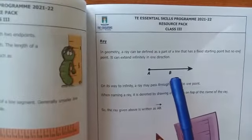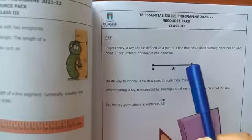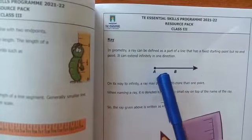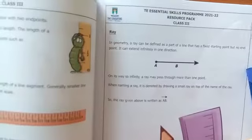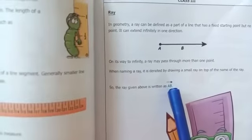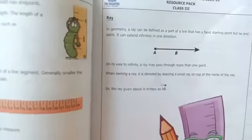The key is that the starting point is fixed but it can extend in one direction, and a ray is represented by 'ray AB'. Okay, the next topic is quadrilateral.